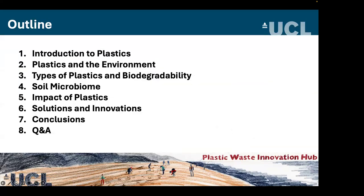I'll start with an outline. We'll talk about plastics — a little about history, properties, and the reasons behind their widespread use. Then I'll talk about the relationship between plastics and the environment, looking at the impact of plastic waste on ecosystems and climate. Moving on to types of plastics and biodegradability, we'll categorize these and focus on biodegradability — understanding the differences is absolutely crucial in addressing environmental issues. I'll also cover the soil microbiome, solutions and innovations, and then conclude with a recap.